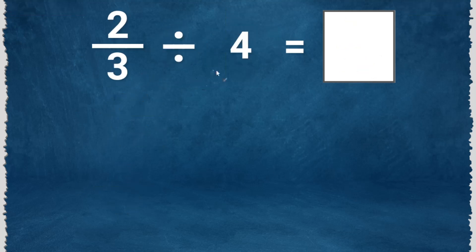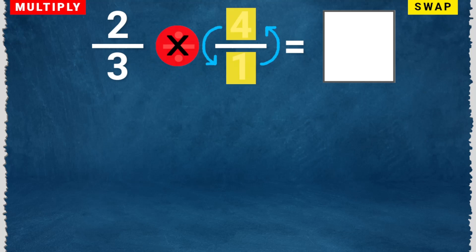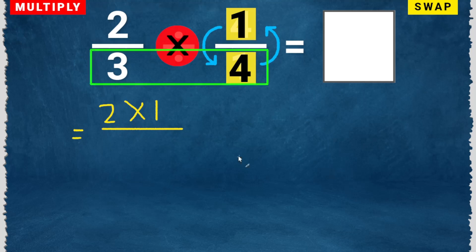2 over 3 divided by 4. We rewrite 4 as a fraction — this will become 4 over 1. Multiply — change this to multiply. Swap, so this will become 1 over 4. Multiply the numerators: 2 times 1. Multiply the denominators: 3 times 4.